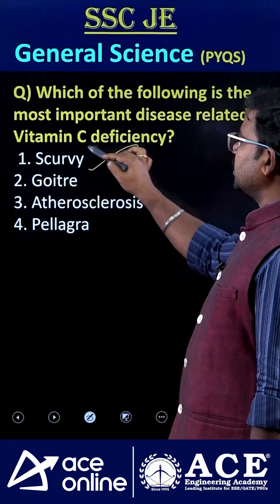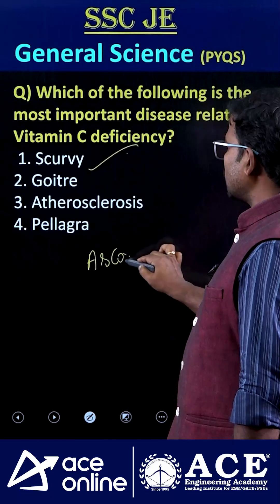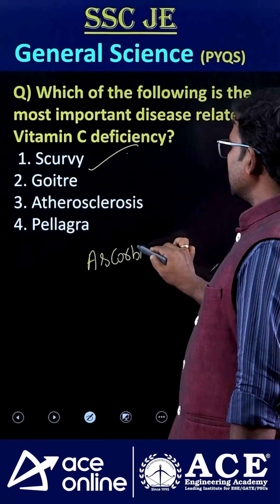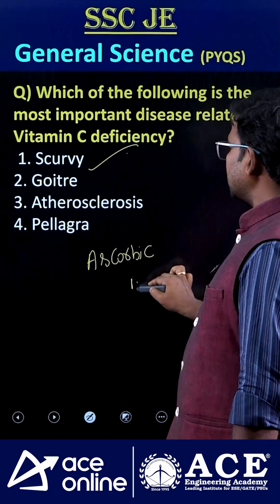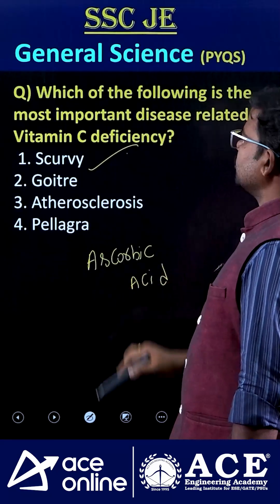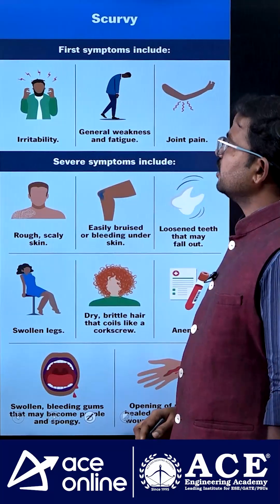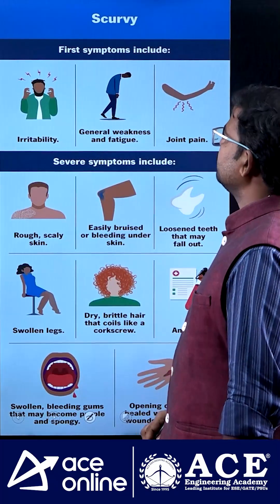Vitamin C is chemically called ascorbic acid. The deficiency of vitamin C causes scurvy.